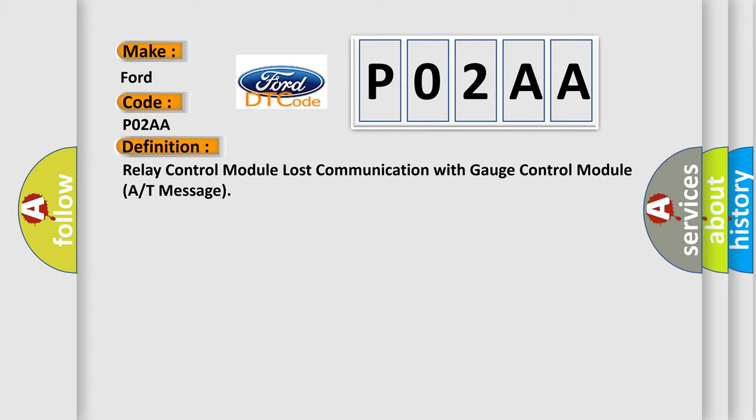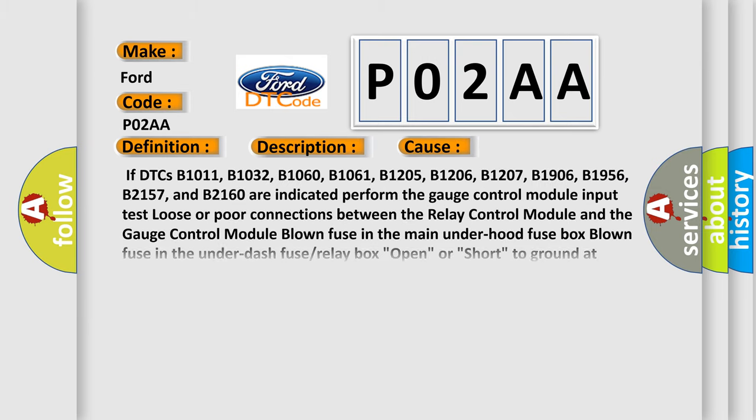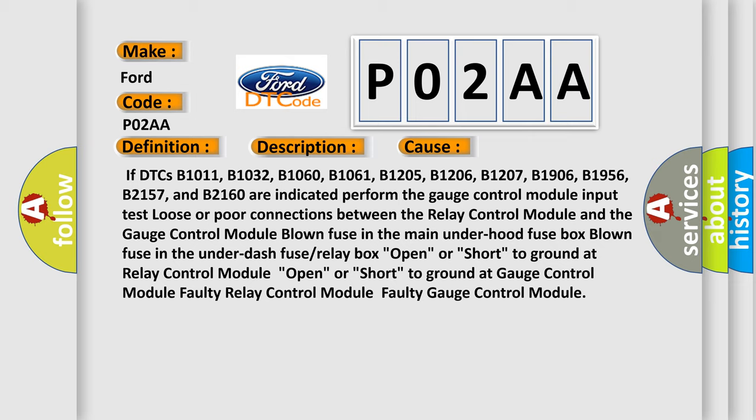The basic definition is: Relay control module lost communication with gauge control module A or T message. This is a short description of this DTC code: poor communication between the relay control module and the gauge control module. This diagnostic error occurs most often in these cases: if DTCs B1011, B1032, B1060, B1061, B1205, B1206, B1207, B1906, B1956, B2157, and B2160 are indicated, perform the gauge control module input test. Other causes include loose or poor connections between the relay control module and the gauge control module, blown fuse in the main under-hood fuse box, blown fuse in the under-dash fuse or relay box, open or short to ground at relay control module, open or short to ground at gauge control module, faulty relay control module, or faulty gauge control module.